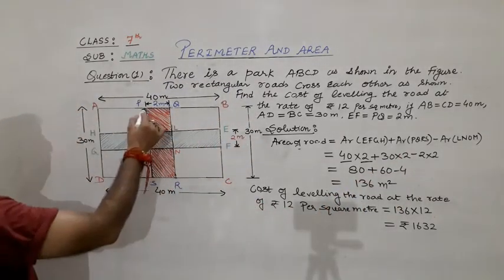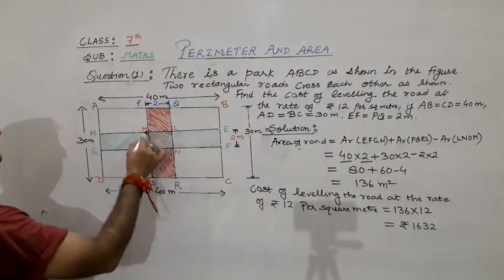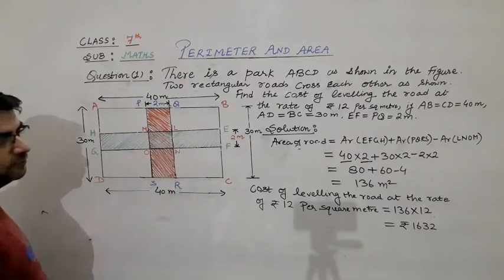While calculating the area of PQRS, this MLNO is also included. So we will subtract this area MLNO one time.